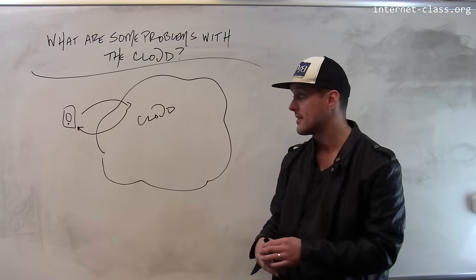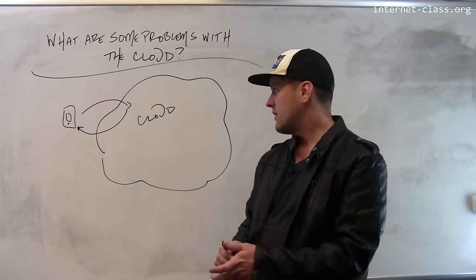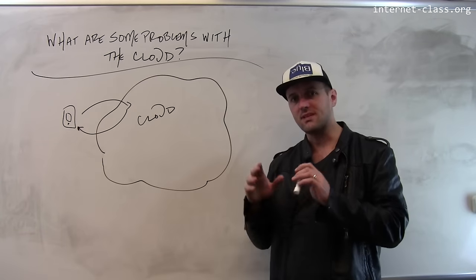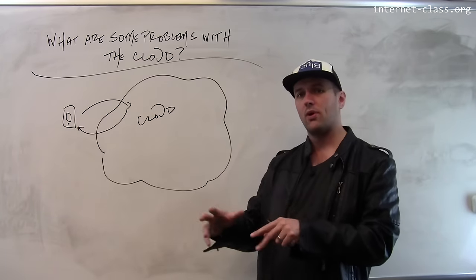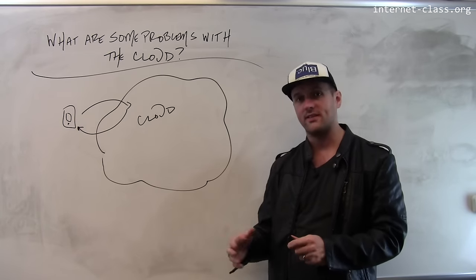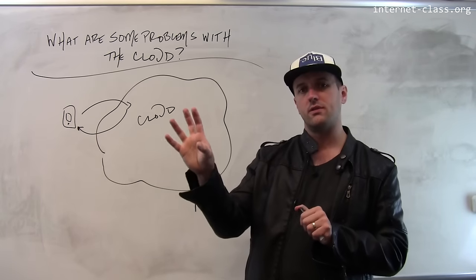Now that's a problem that we're going to solve, and one of the ways we're going to solve it is we're going to start to distribute the cloud more. So rather than having one big data center, every cellular tower will have some computing co-located with it. We're already starting to see this happen where people are becoming more interested in putting powerful computing closer and closer to those edge devices.